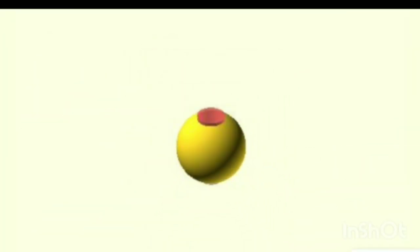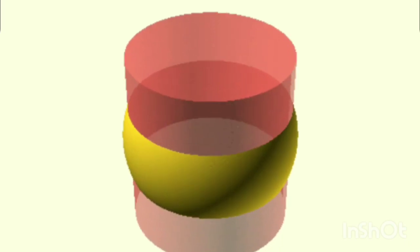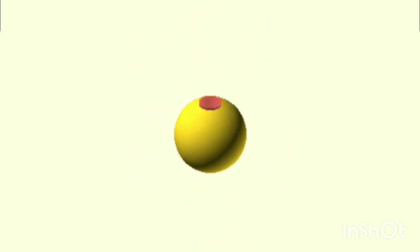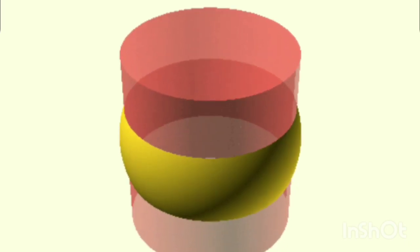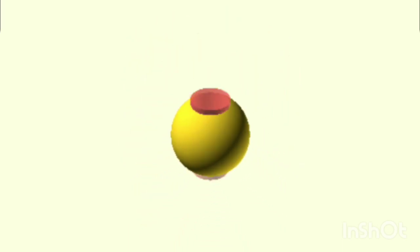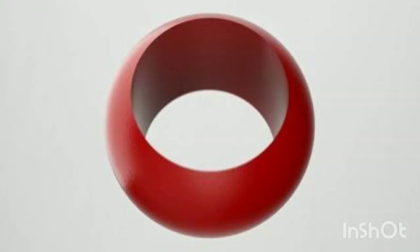In geometry, the napkin ring problem involves finding the volume of a band around a sphere - that is, the part that remains after a hole, in the shape of a circular cylinder, is drilled through the center of the sphere.